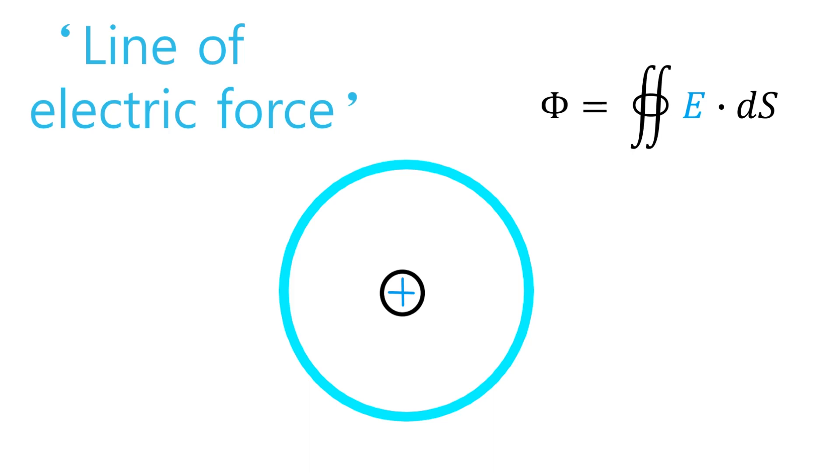The minute superficial content could be drawn like this. Then, let's suppose the situation that a vector called line of electric force passes this minute surface, and the unit normal vector of the surface could be drawn like this.